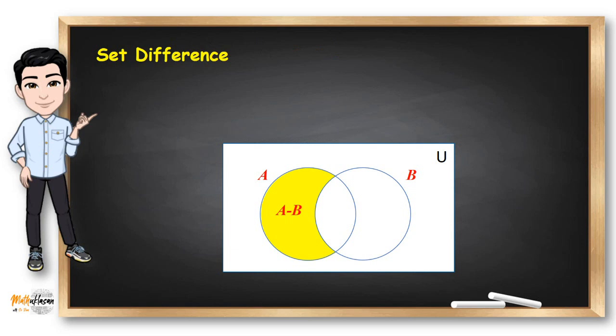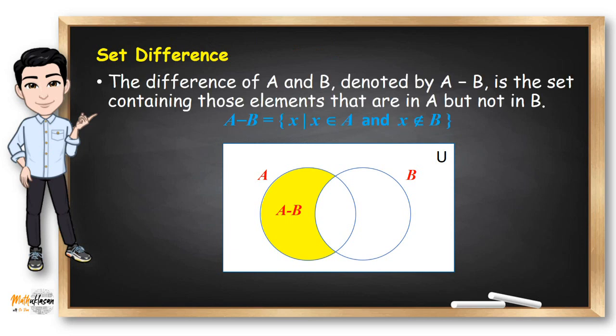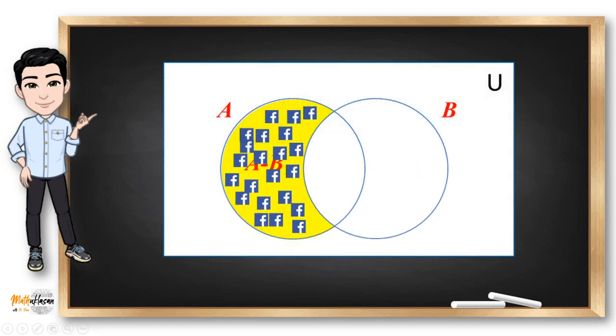Going back to the set operations, the difference of A and B, denoted A-B, is the set containing those elements that are in A but not in B. In symbols, A-B is the set containing X such that X is an element of A but X is not an element of B. In the Venn diagram, the shaded yellow portion represents A minus B. In the Facebook and Instagram scenario, if we remove all students who have Instagram, what remains is the set of students with Facebook only.